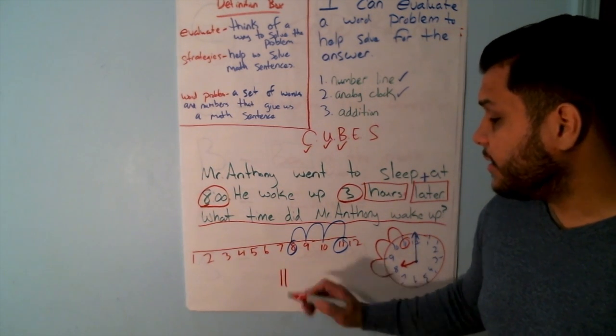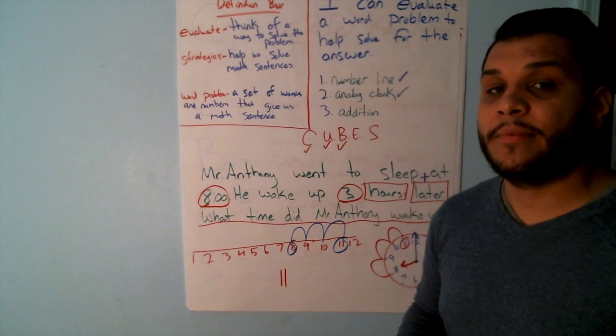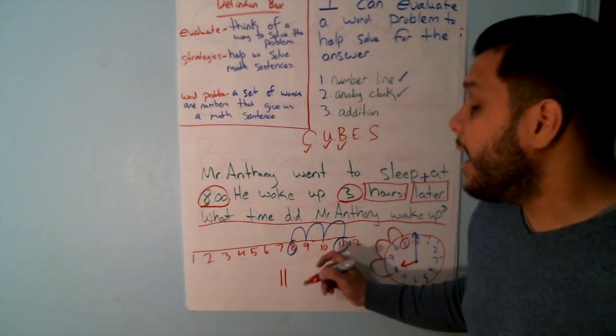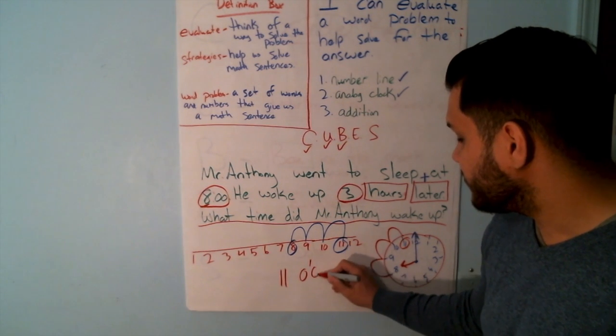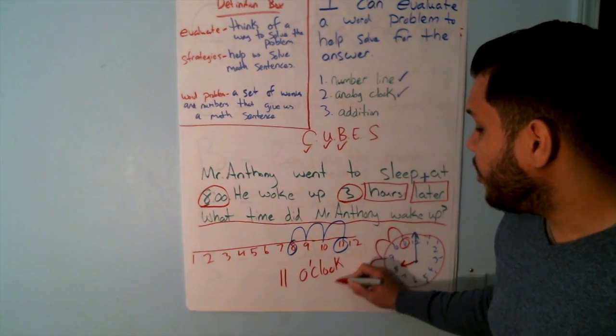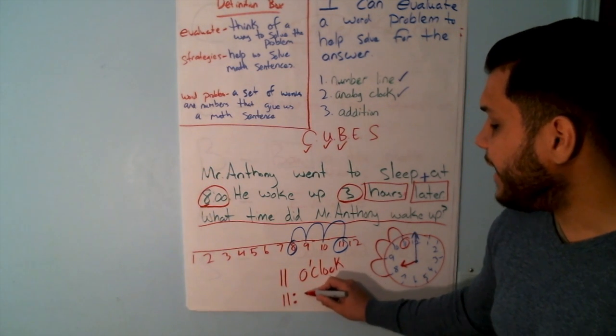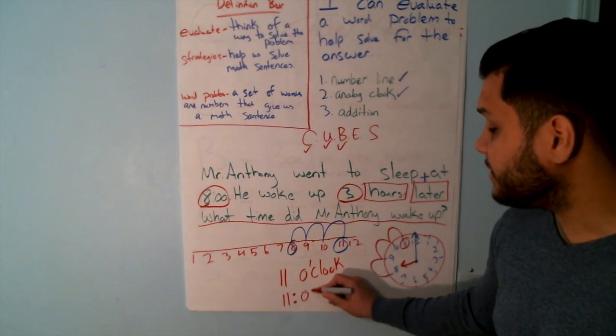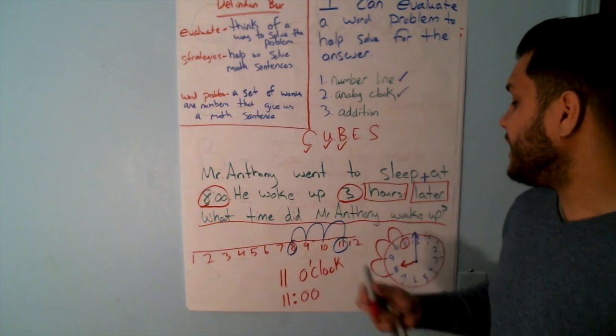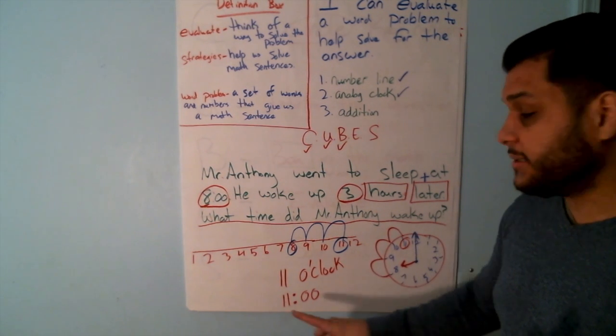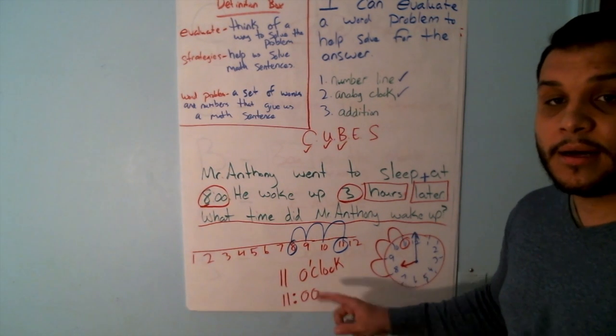The last thing that I need to do is answer it correctly. I can't just write 11 because that is not a correct time. The correct time will be either 11 o'clock or 11 separated by the two dots with no minutes. Did I answer my question? Mr. Anthony woke up at 11 o'clock.